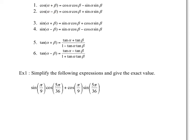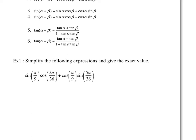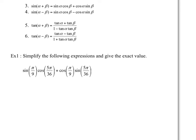Let's take a look at this first expression. We have sine of π/9 — not an exact value we know — cosine of 5π/36, another value we do not know, not on the unit circle, and then these two values as well. But if you look closely at the identity, sine of alpha plus beta equals sine alpha cosine beta plus cosine alpha sine beta.